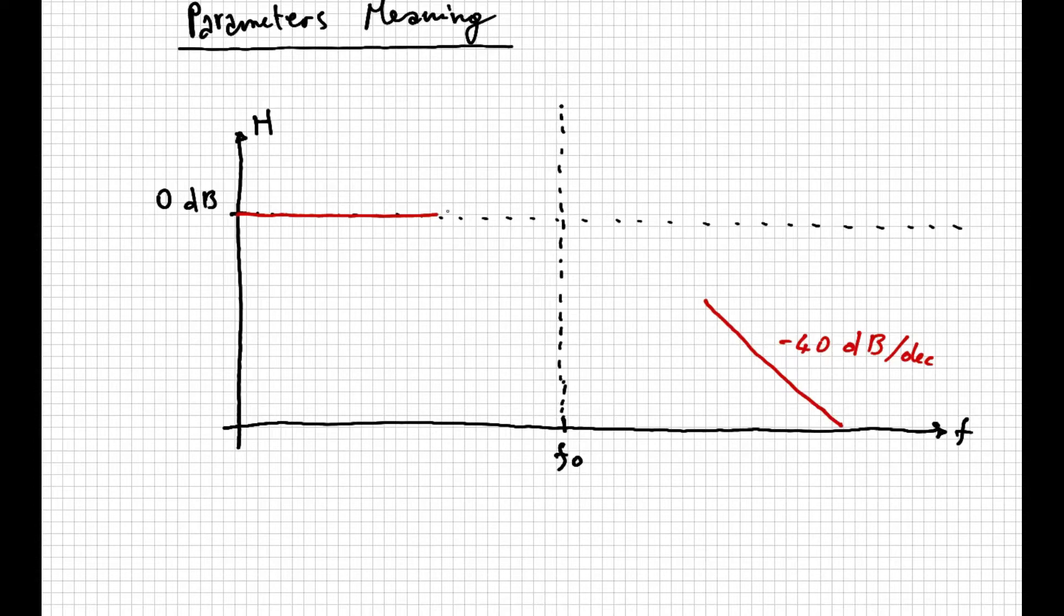For filters we examined in the past, we transition from the beginning of the diagram to the end with a smooth curve, which starts going heavily down when we reach the pole of the function. With more complicated filters, like the Sallen-Key that we are examining, things become more complicated.